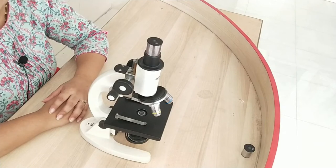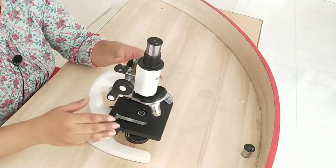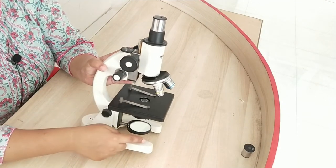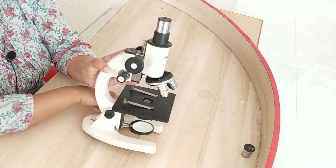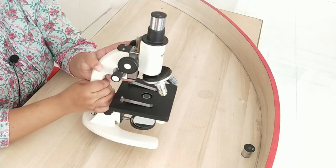Let's start with mechanical parts. First one is the foot or base. You can see here the foot or base, it is a U-shaped structure and supports the entire weight of the microscope.